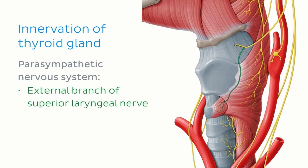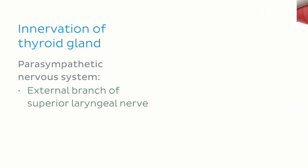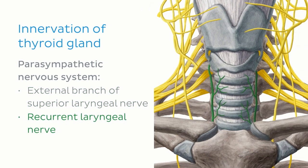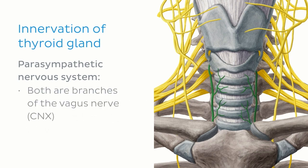The first is the external branch of the superior laryngeal nerve, which approaches the area of the thyroid gland from the superior aspect. The second is the recurrent laryngeal nerve, which comes towards the thyroid gland from an inferior angle. Remember, both are branches of the vagus nerve, cranial nerve 10.